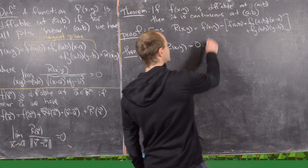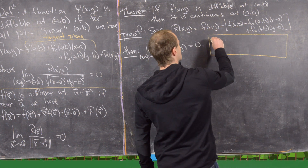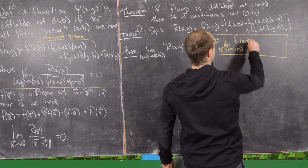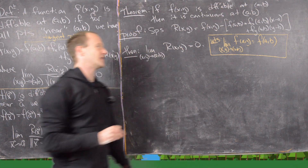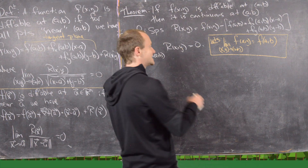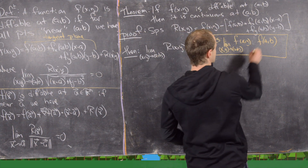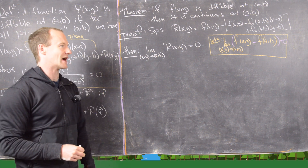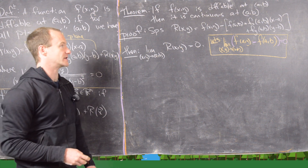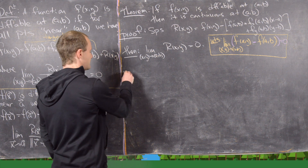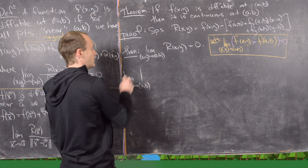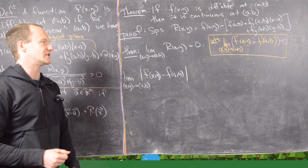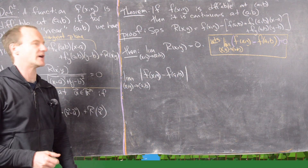Now we want to show that this implies f is continuous, i.e., the limit as (x,y) goes to (a,b) of f(x,y) equals f(a,b). That is the definition of continuity at (a,b). Notice this is equivalent to showing that the limit of f(x,y) minus f(a,b) equals zero. So we'll look at the limit as (x,y) goes to (a,b) of the absolute value of f(x,y) minus f(a,b), since a function tends to zero if and only if its absolute value tends to zero.